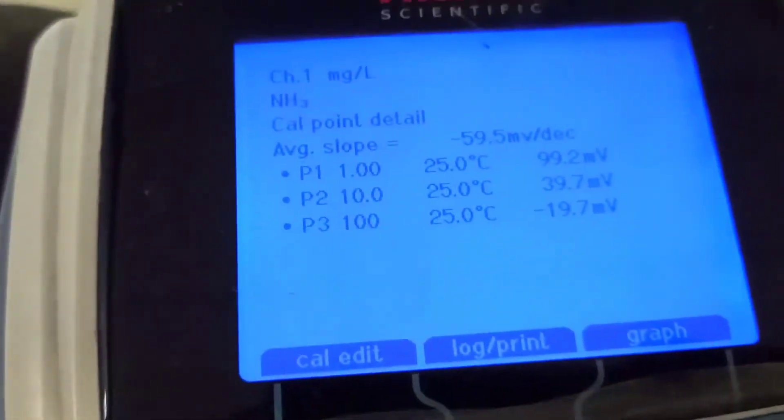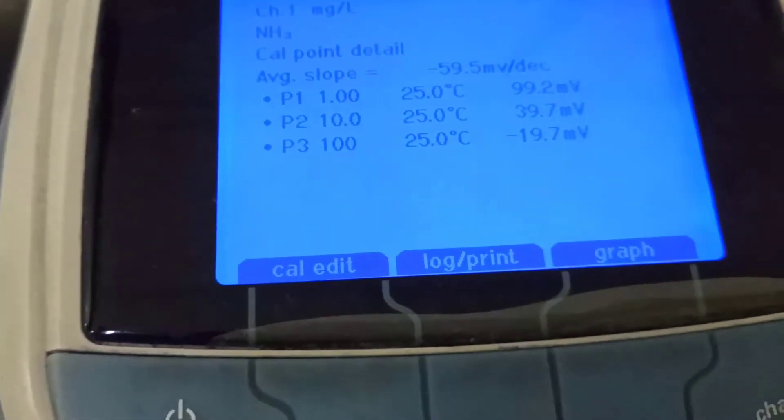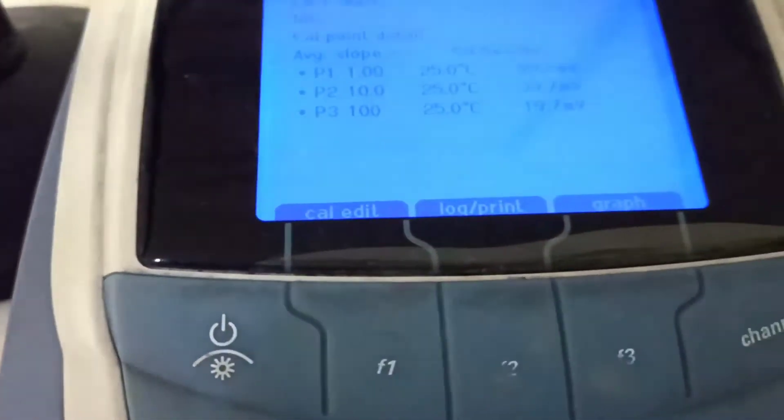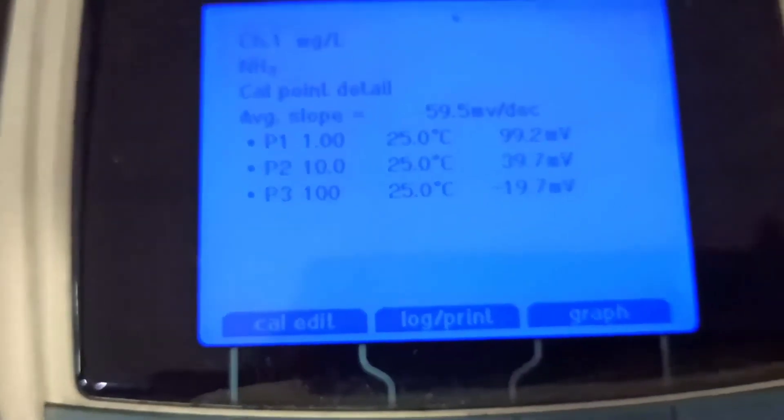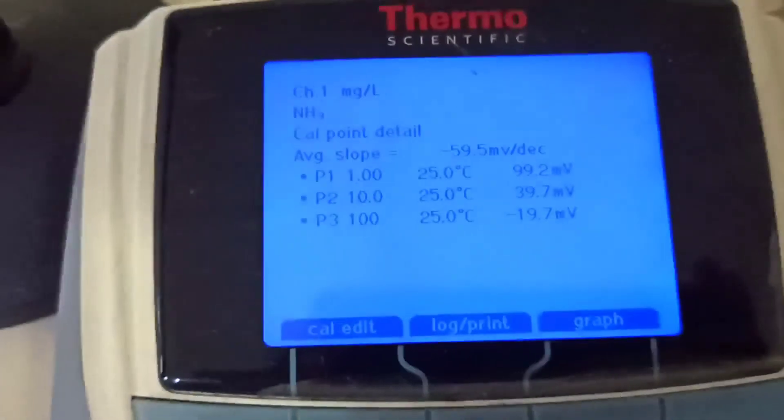We can see our average slope is minus 59.5 millivolt. That means our calibration is correct because the range is minus 55 to minus 60, and our average slope is within at minus 59.5 millivolt.